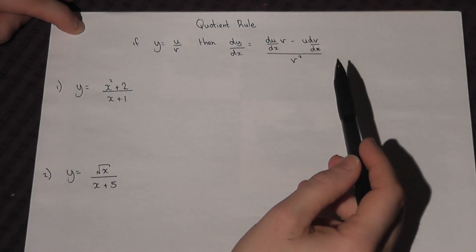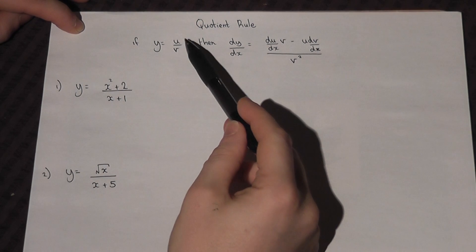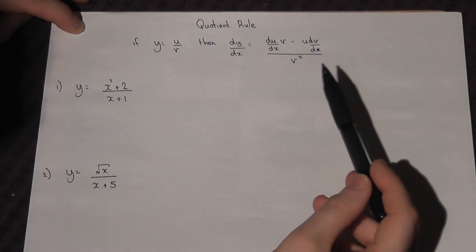The Quotient Rule provides a system for differentiating fractions, where u is the numerator and v is the denominator.